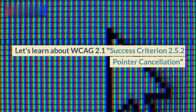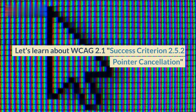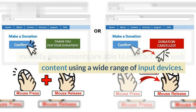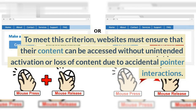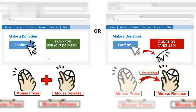Let's learn about WCAG 2.1 Success Criterion 2.5.2 Pointer Cancellation. This criterion is designed to ensure that users with mobility impairments are able to interact with web content using a wide range of input devices. To meet this criterion, websites must ensure that their content can be accessed without unintended activation or loss of content due to accidental pointer interactions.